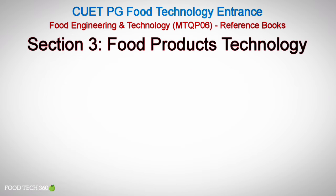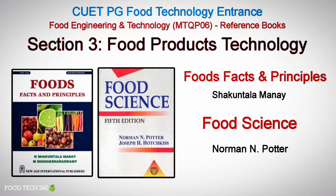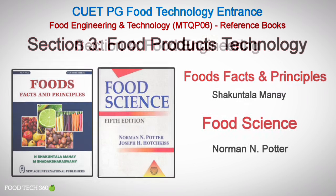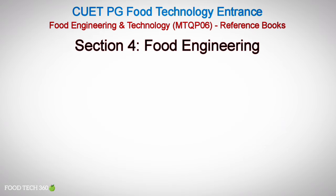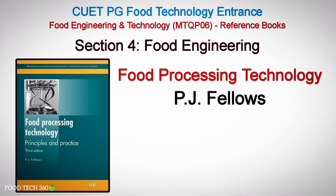For Section 3, Food Products Technology, you can refer to both Food Facts and Principles by Shakuntala Amane and Food Science by Norman and Potter. Combined reference of these books can easily cover this section. Finally, for Section 4, Food Engineering, you can refer to P. Fellows' Food Processing Technology, where you can cover all the unit operations related topics.